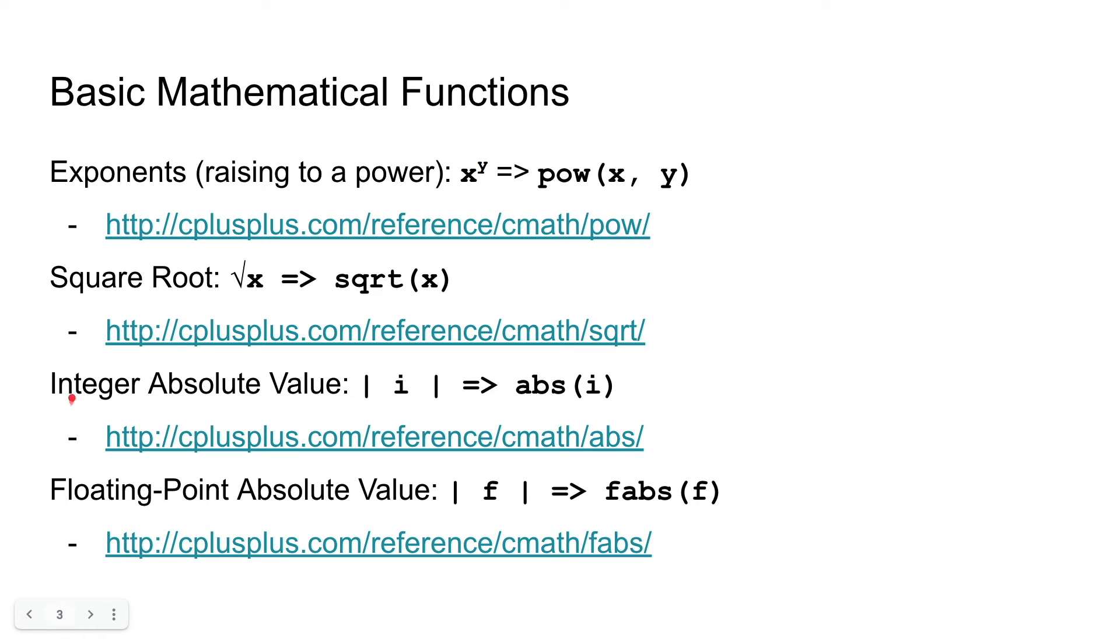Next, we have the integer absolute value. Absolute value, just like in math, is finding how far a number is away from 0. Basically, it's just taking the number, and if it's negative, making it positive. How do we do that? We use the absolute value function if we have an integer, or if the arithmetic we're doing results in an integer.